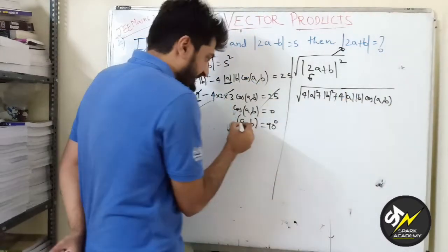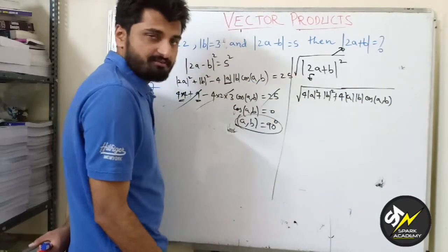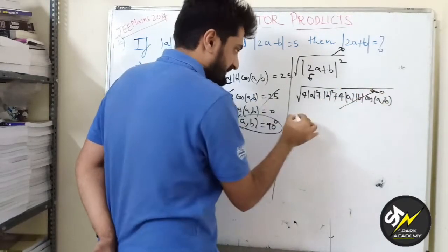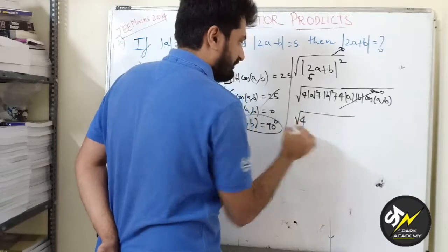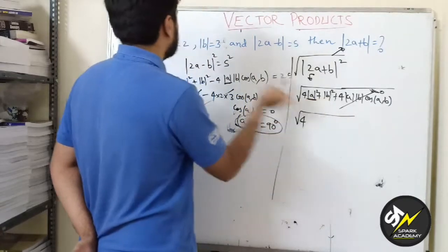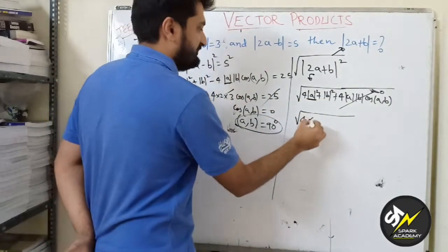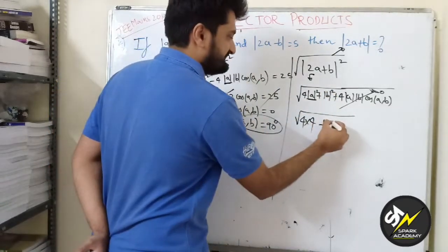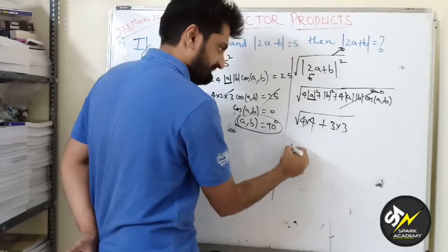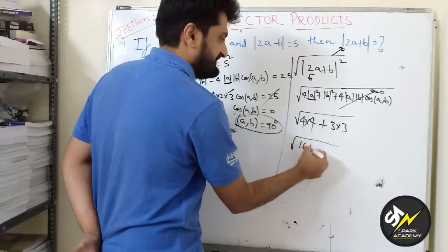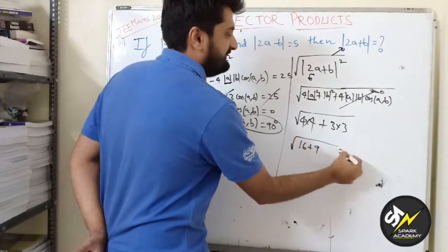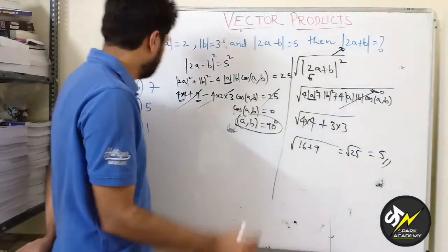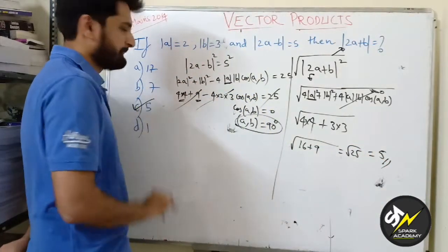Now we know that a,b is 90 degrees, so this will get cancelled out and we are left with 4 times |a|². |a|² is 2² which is 4, plus |b|² which is 3² = 9. 4×4 is 16, 3² is 9, √25 which is 5, which is option 3.